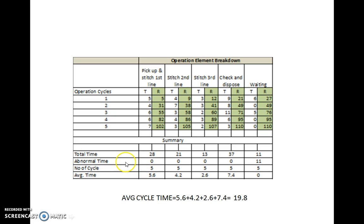Each element's total time is calculated by adding all 5 cycle times. Since the waiting time is abnormal and not usual, it can be eliminated. The number of cycles is 5, so the average time is obtained by dividing the total time by the number of cycles. This gives the average element time for this operation.